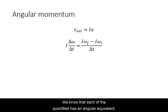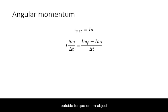We know that each of the quantities has an angular equivalent. The angular equivalent of F equals Ma is tau net equals I alpha. The net outside torque on an object is equal to its moment of inertia times its angular acceleration.